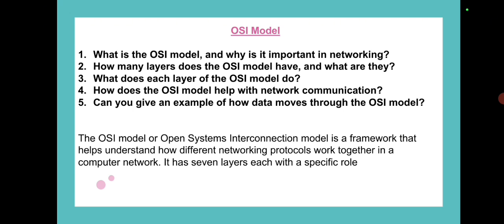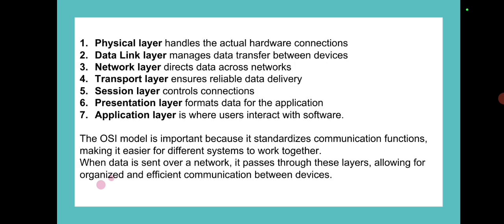The OSI model, or Open Systems Interconnection model, is a framework that helps understand how different networking protocols work together in a computer network. It has seven layers: the physical layer handles actual hardware connections; the data link layer manages data transfer between devices; the network layer directs data across networks; and the transport layer — the heart of the OSI model — ensures reliable data delivery. Physical, data link, and network layers are hardware layers; session, presentation, and application layers are software layers.